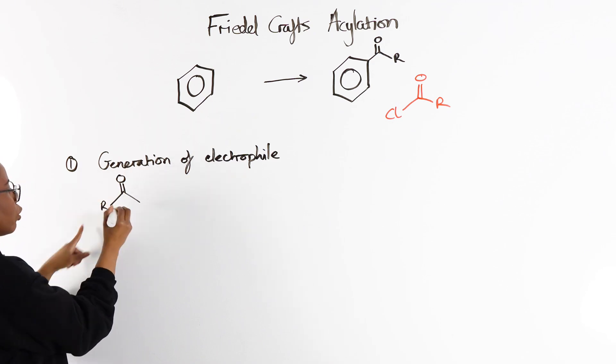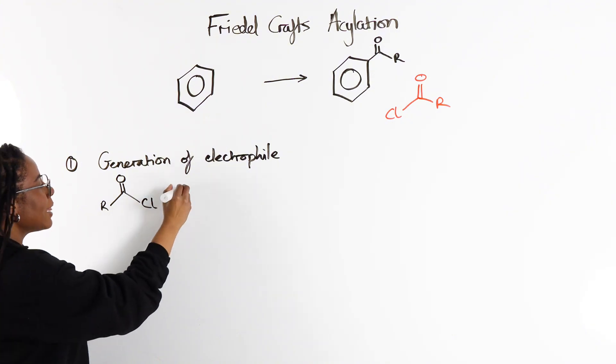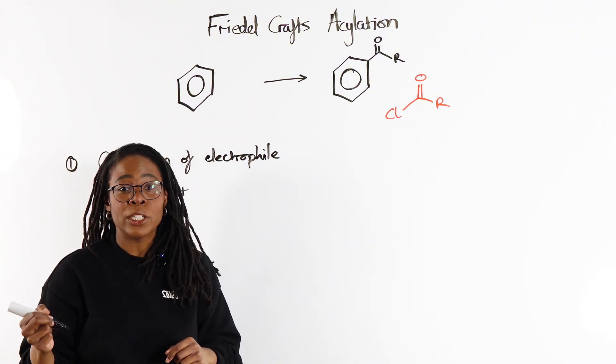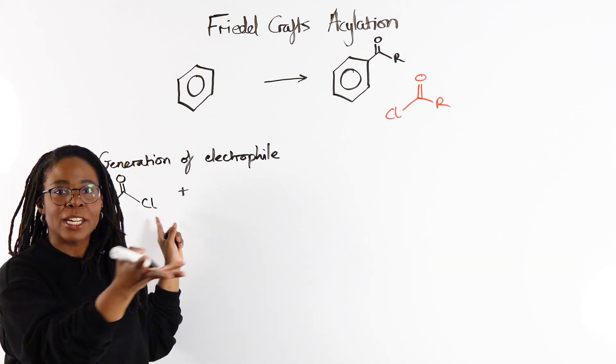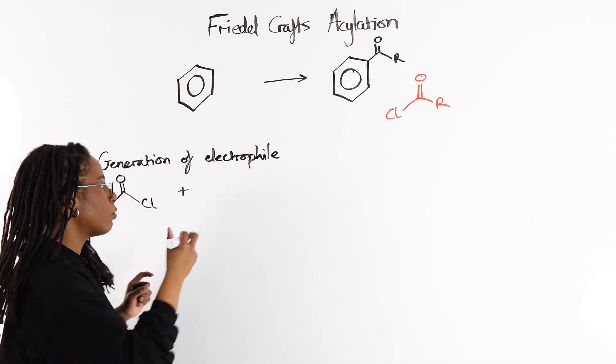This R-group could be anything we like. And then we're going to add a catalyst. The catalyst that we use is called a halogen carrier. So it's something that's going to take this halogen off of the acyl chloride.